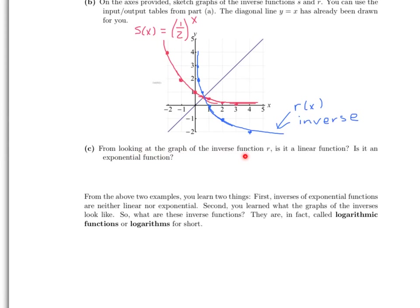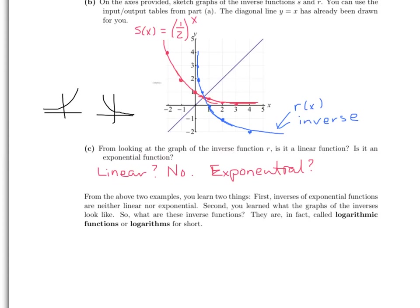Let's look at part C. From looking at the graph of the inverse function r, is it linear or exponential? You can see from the shape of the r of x graph that it is not linear. Is it exponential? Exponential graphs take two forms: growth or decay. For exponential decay, the graph approaches the x-axis but never crosses it — that's not what we see here. The graph crosses the x-axis and keeps going down, so it does not fit either exponential form and is therefore not exponential.